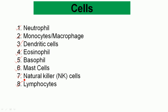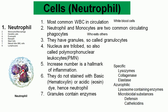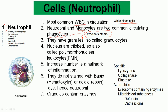Let's start with the neutrophil. Neutrophils are the most common white blood cells in circulation. Neutrophils and monocytes are two common circulating phagocytes in the blood — phagocytes are cells that actually eat other cells. They have granules, so they are also called granulocytes, and they have a nucleus with tri-lobed features, so they are also called polymorphonuclear leukocytes, or PMN.